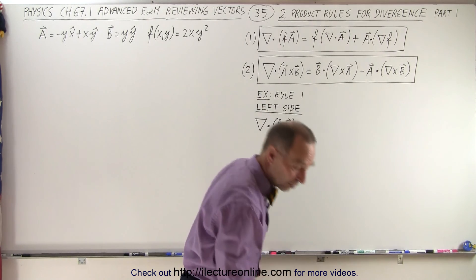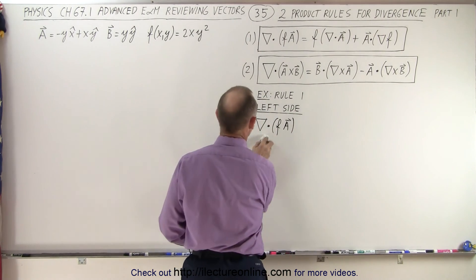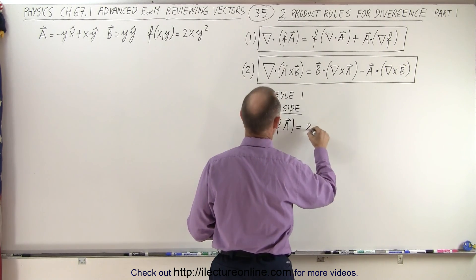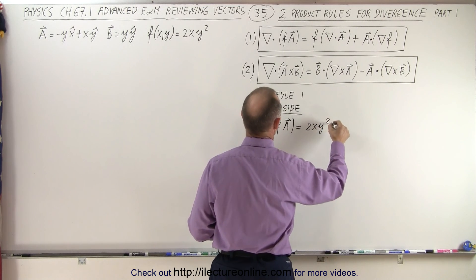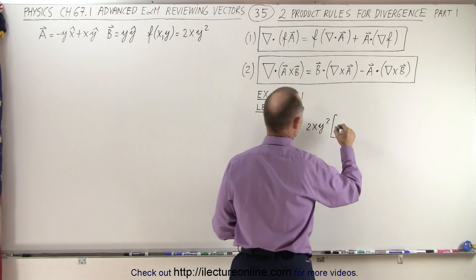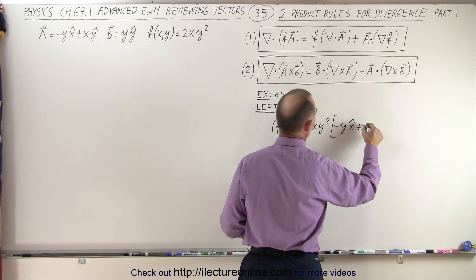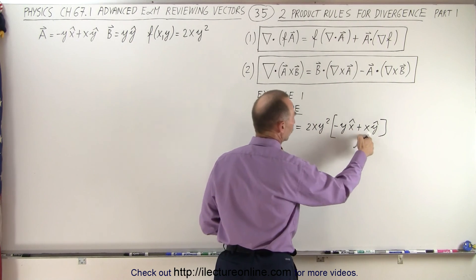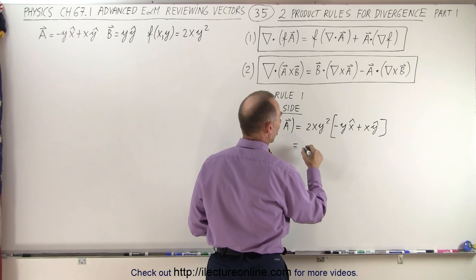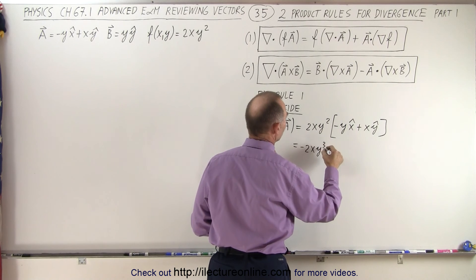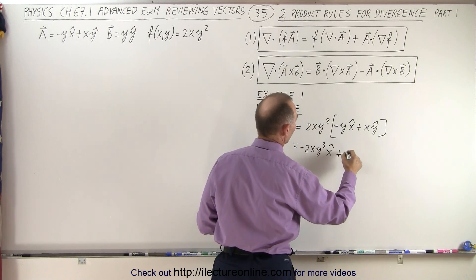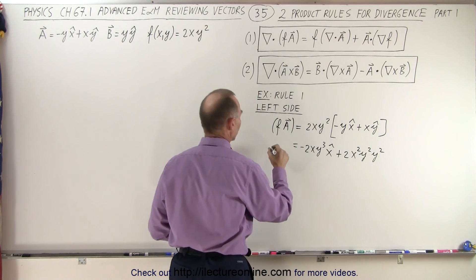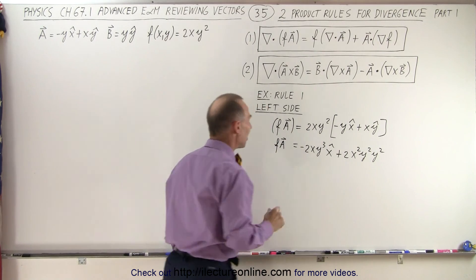Let's start by multiplying this and see what we get. This is equal to the function, which is 2xy², multiplied times the A vector, which is minus y in the x direction plus x in the y direction. When we do that, we simply multiply this times each of the two terms, so this becomes minus 2xy³ in the x direction and plus 2x²y² in the y direction. That's equal to f multiplied times the A vector.